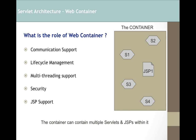So that's how the web container works. The web container performs five main operations: it provides communication support, meaning multiple servlets can communicate with each other. It manages the servlet lifecycle — covering the init method, service method, and destroy method. It creates multiple threads for multiple requests. It provides security features, for which servlets are well known. And it supports JSP, which will be discussed in a later tutorial.